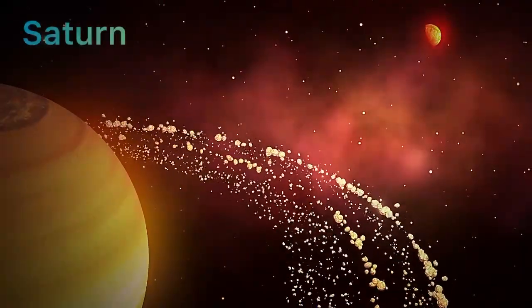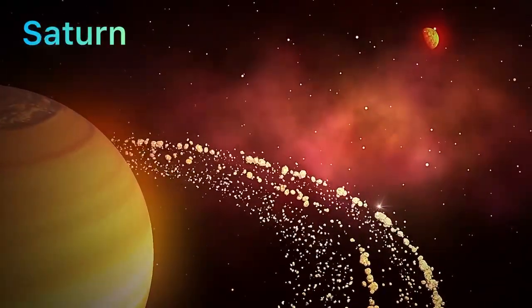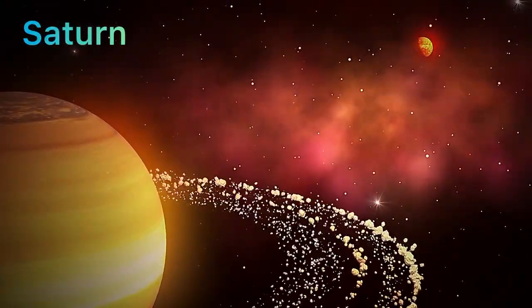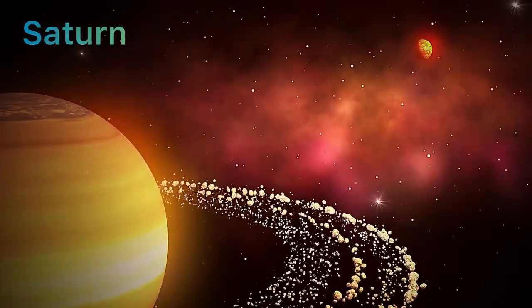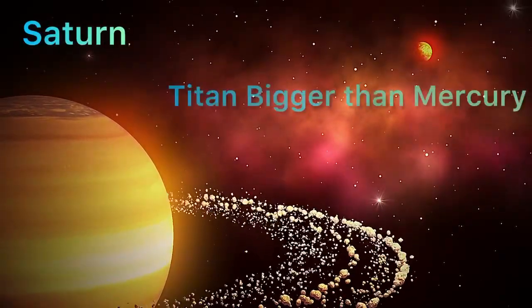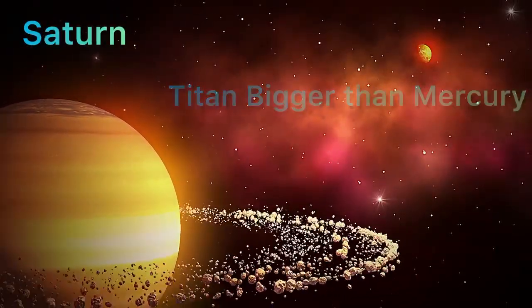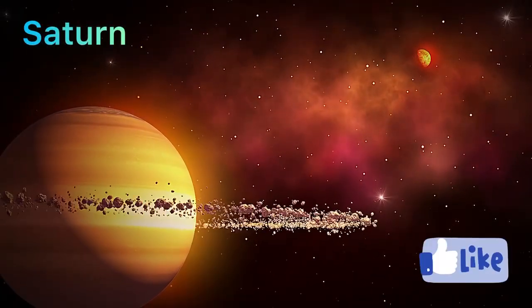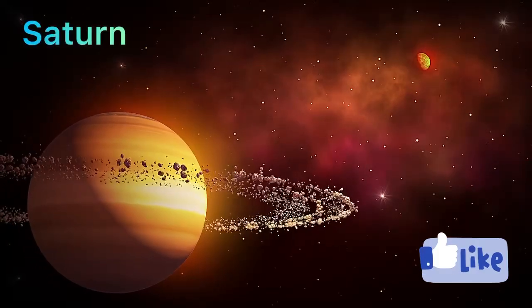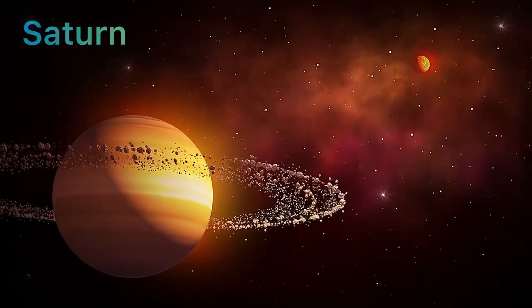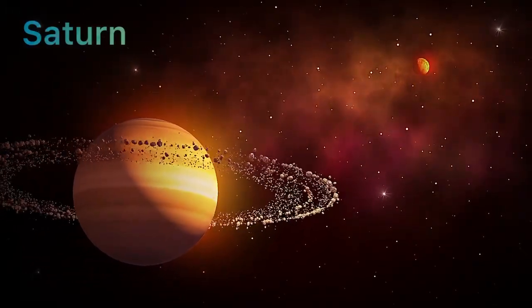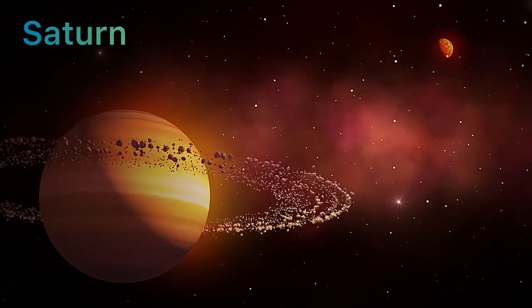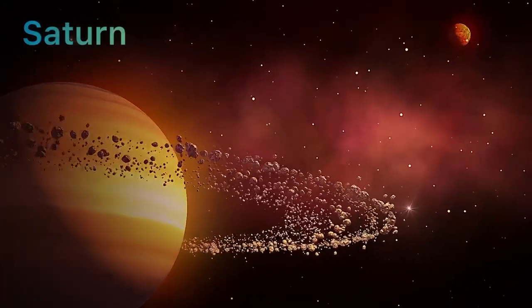Now let's meet Saturn's huge family of moons. Saturn has 145 moons, more than any other planet. The biggest one is called Titan. It's even larger than Mercury and has lakes made up of liquid. Scientists think that Titan might even have some form of life. Isn't that cool?